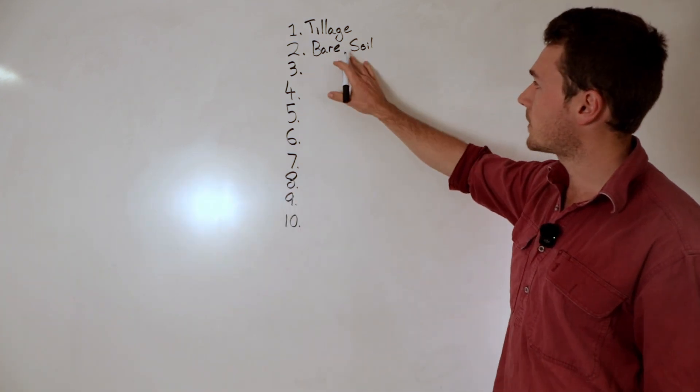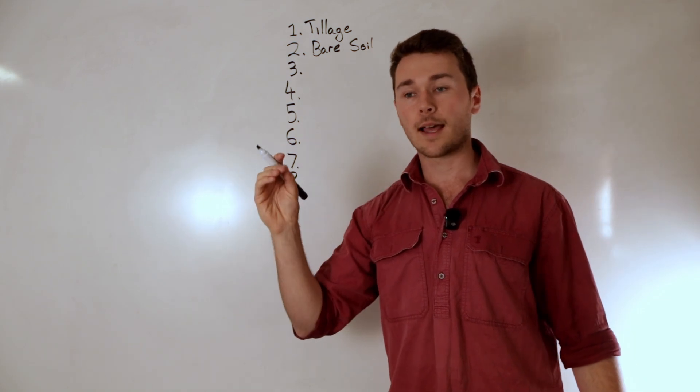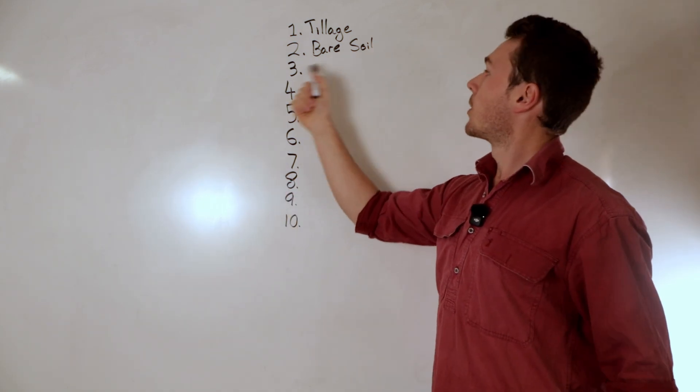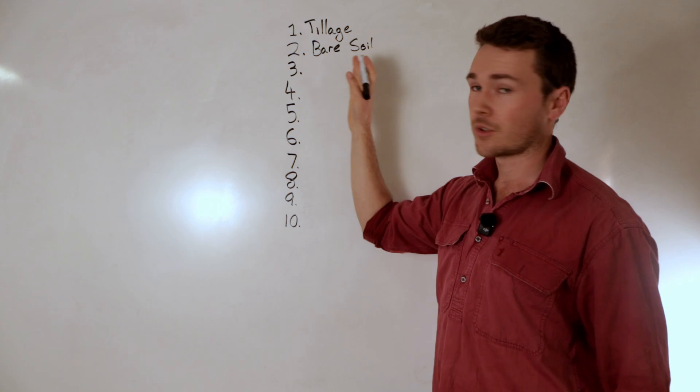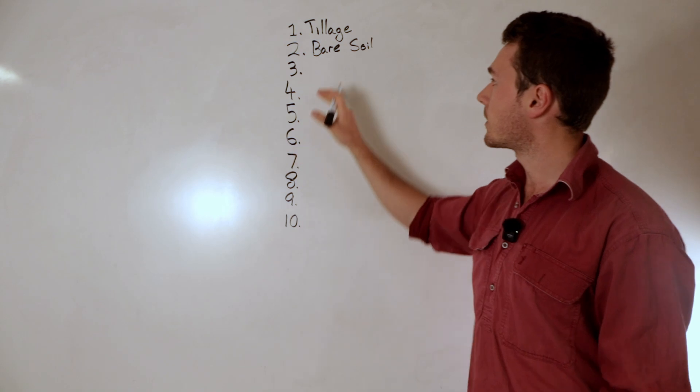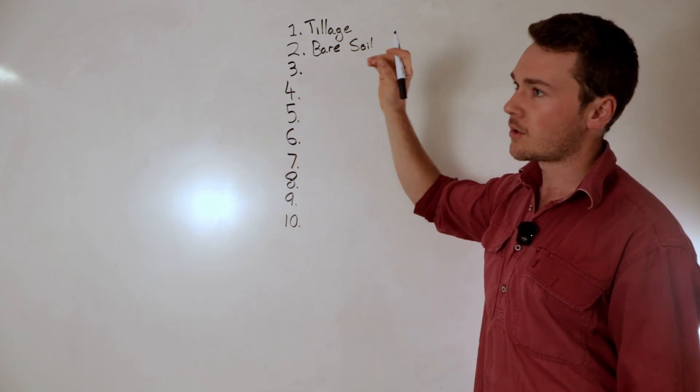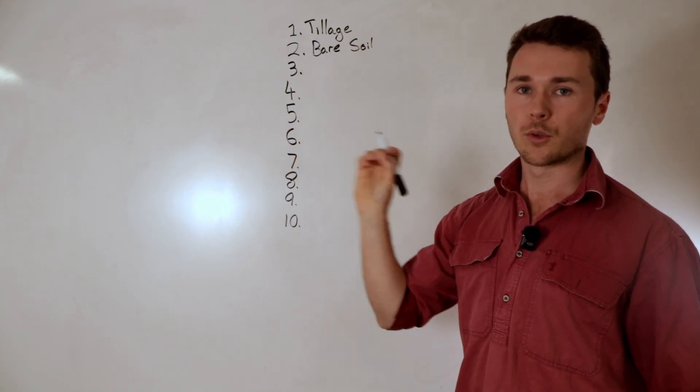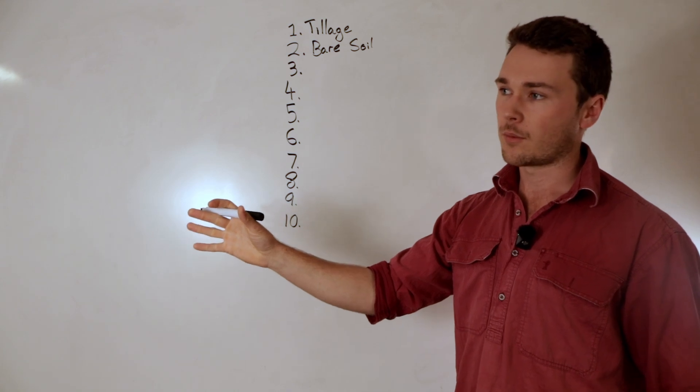That can cause either surface sealing or those particles can get washed away in runoff. And so bare soil increases the amount of runoff as well as erosion which means we're losing topsoil. The other problematic component is that it increases the evaporation rate. So we're going to be losing more water. Not only do we not capture water, we also lose more water from evaporation.